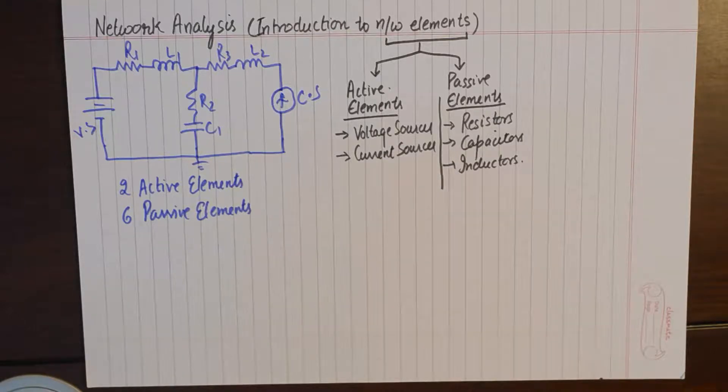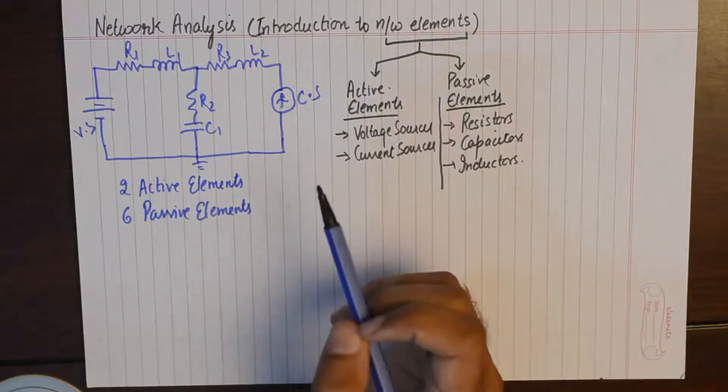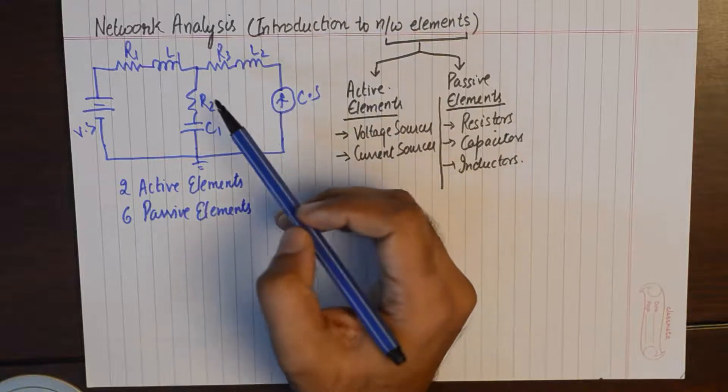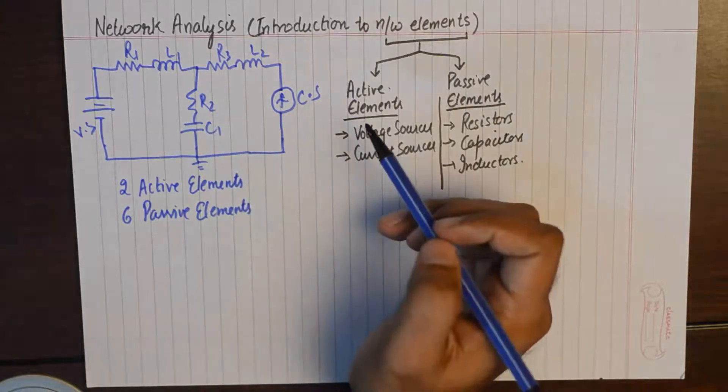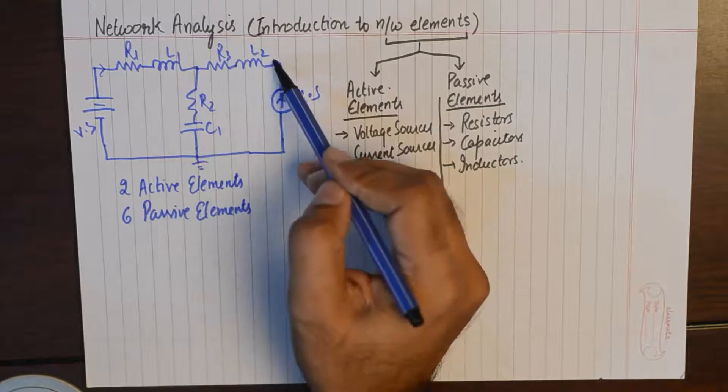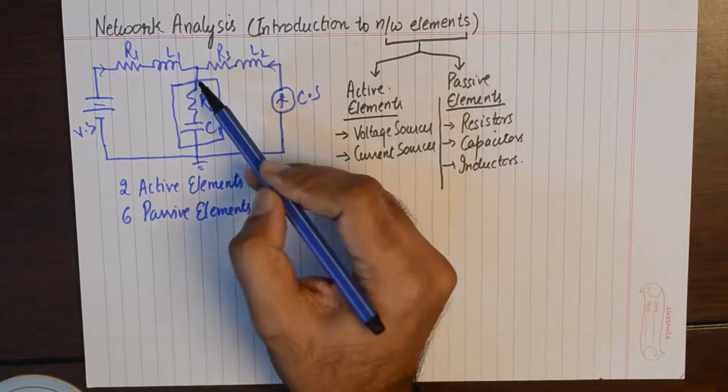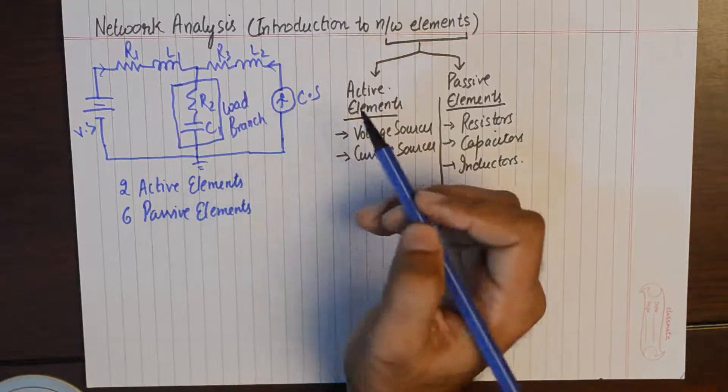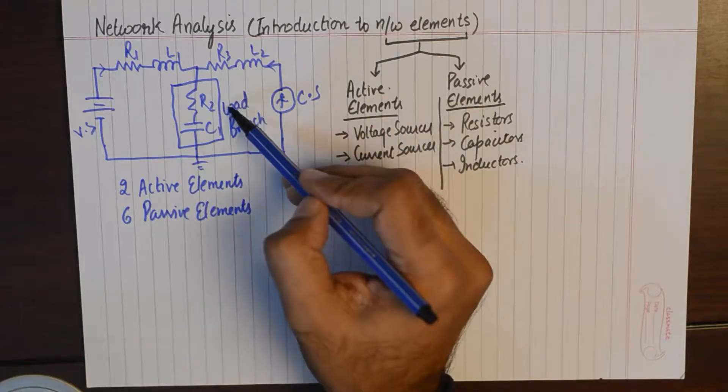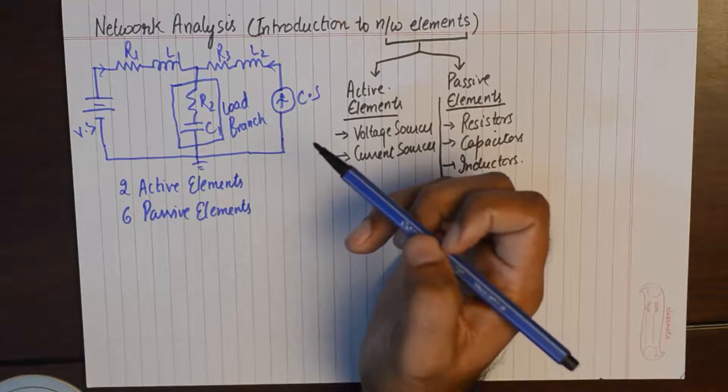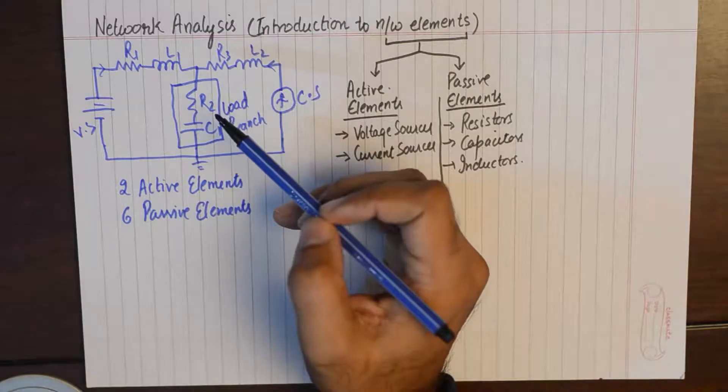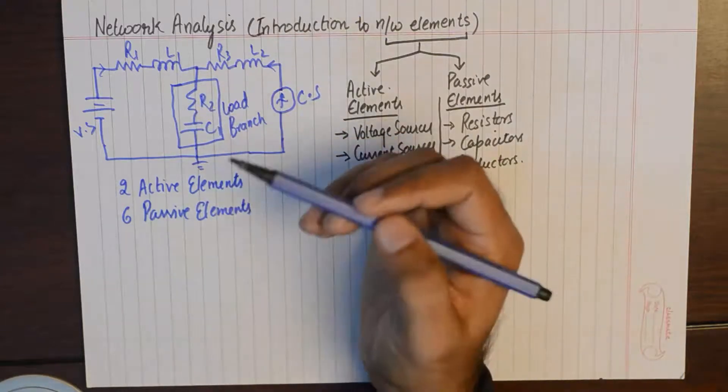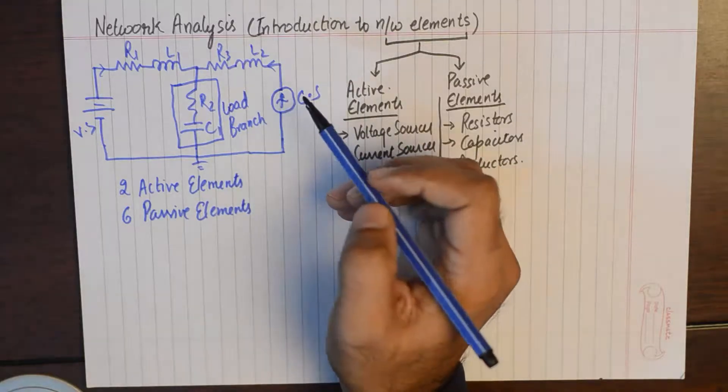As an introduction to network elements, we would say that an interconnection of all these elements in a complicated way that makes some sense would make up a network. For example, the network that I have drawn can be thought of as a network where two active elements are supplying energy to our load. We can assign the branch right in the middle as our load branch. So what is happening here is there are two sources which are driving this load. We are trying to perform some function, we are trying to attach some electrical instrument that we want to run in this branch in this area, and in order to make that instrument work we are supplying energy to that instrument.